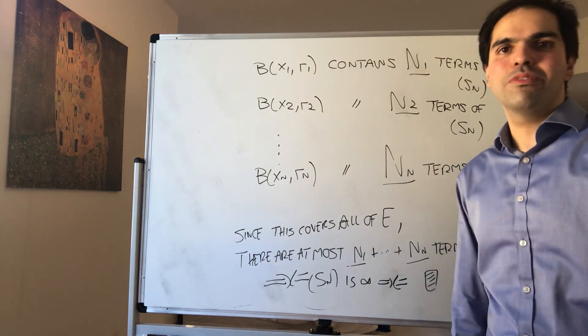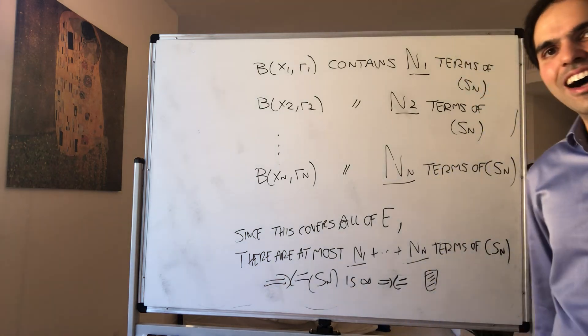So covering compactness implies sequential compactness. The converse is also true, but like, it would take an hour to solve. All right, thank you very much.